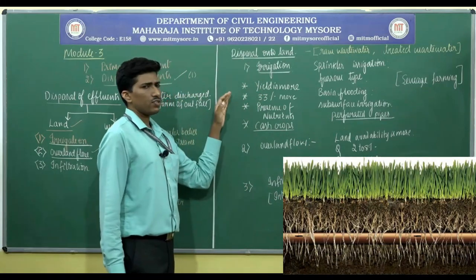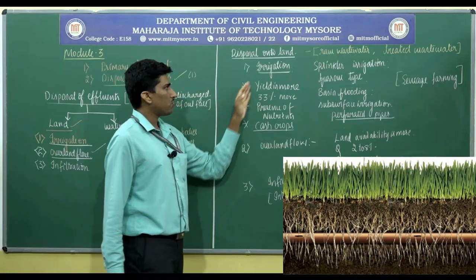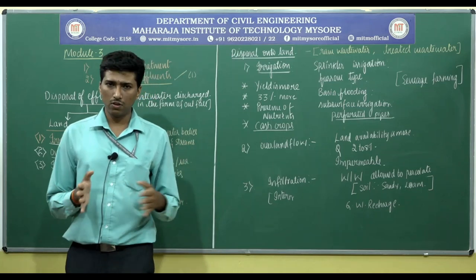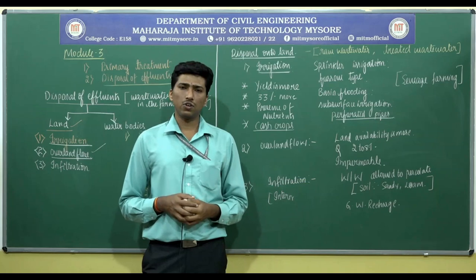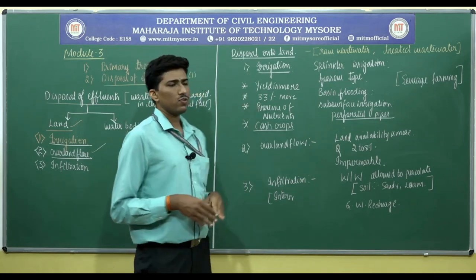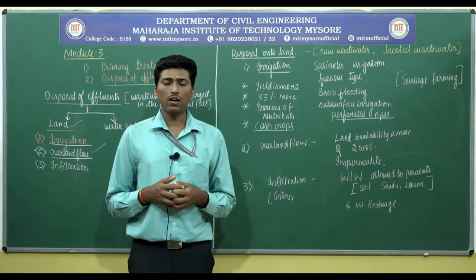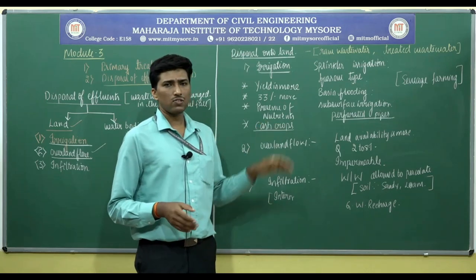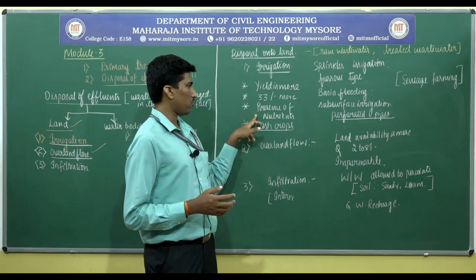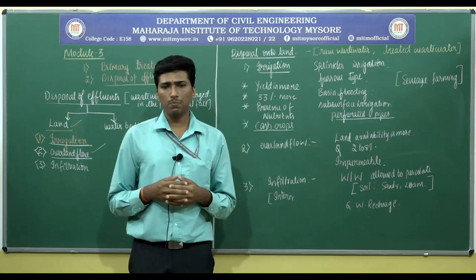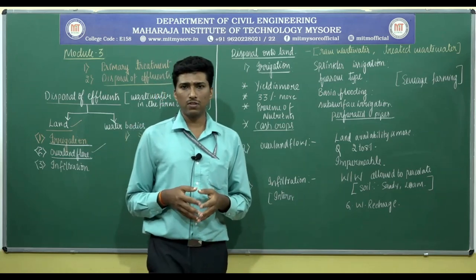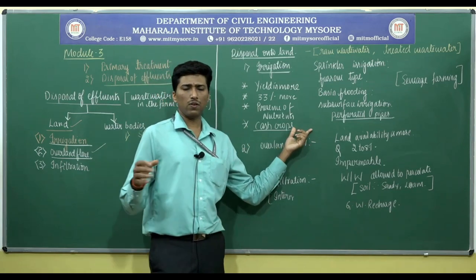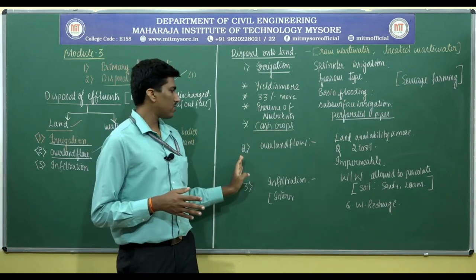The advantages of disposal through irrigation: the yield is more — it accounts for 33 percent more yield compared to normal water supplied through canals or other channels. The presence of nutrients such as potassium, nitrate, phosphate, sulfate, and trace nutrients are taken up by the plants, enhancing growth and yield. It is also advantageous for cash crops — growing mulberry plants is feasible for silkworm cultivation, and non-edible types of crops are also feasible.